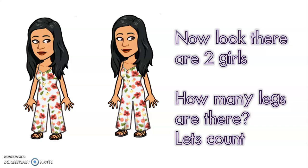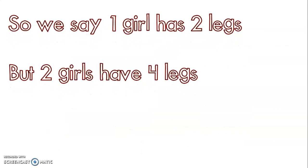Now there are two of me. How many legs are there? Let's count: one, two, three, four. So we say one girl has two legs, but two girls have four legs.